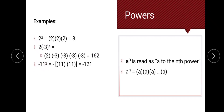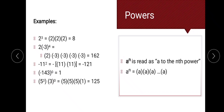For negative 11 to the second power, we take the negative outside the bracket: 11 times 11 gives positive 121, and then we attach the negative sign, so the answer is negative 121. Any number raised to 0 is always equal to 1, so negative 143 raised to 0 equals 1. For 5 to the third power multiplied by 3 to the 0 power: 5 times 5 times 5 equals 125, and 3 to the 0 equals 1, giving a final product of 125.